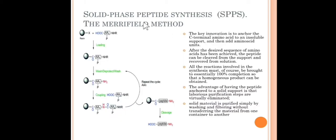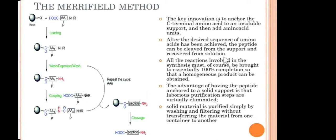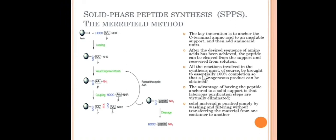The Merrifield method is very simple. The key innovation is to anchor the C-terminal amino acid to insoluble support and then add another amino acid units. After the desired sequence of amino acids has been achieved, the peptide can be cleaved from the support and recovered from solution. All reactions involved must be 100% completed to get the homogeneous product. The advantage of having the peptide anchored to solid support is that laborious purification steps are virtually eliminated. Solid material is purified simply by washing and filtering without transferring from one container to another.